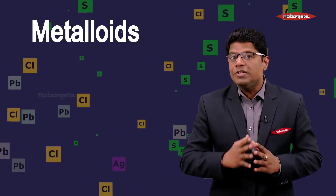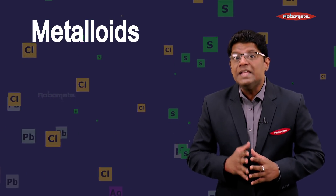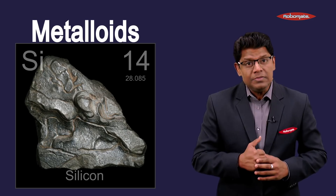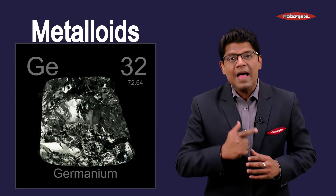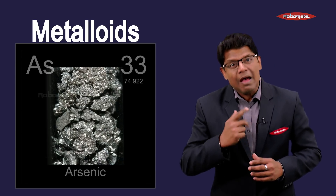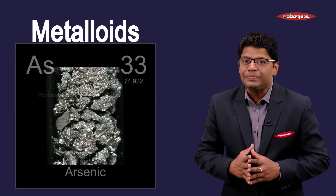Examples of metalloids are silicon, germanium, and arsenic.